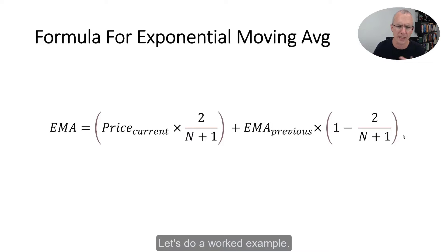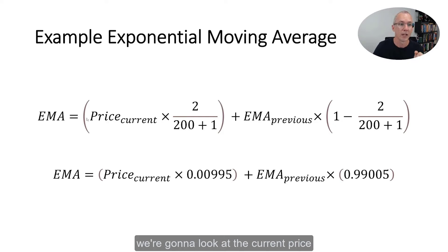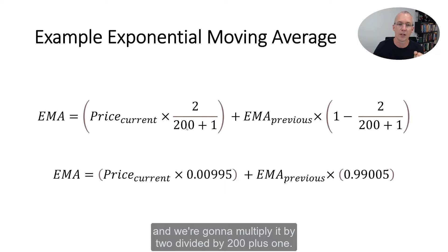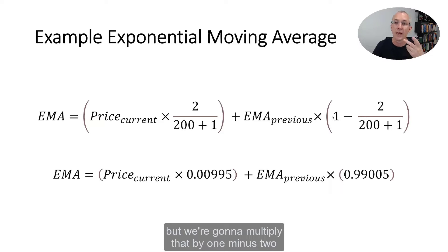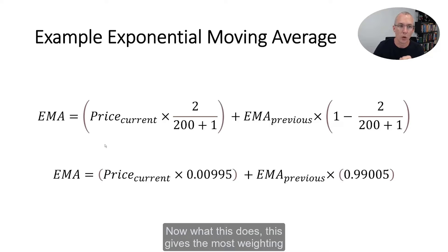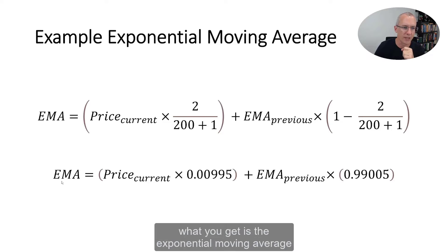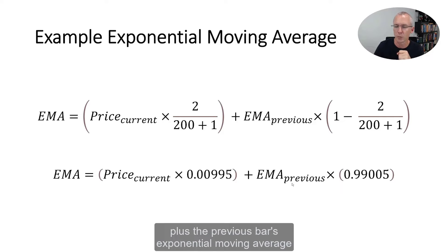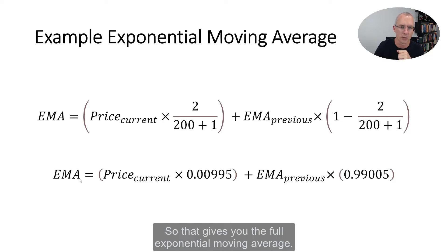Let's do a worked example. To calculate a 200-day exponential moving average, we look at the current price and multiply it by 2 divided by (200 plus 1), then add to that the previous bar's moving average multiplied by 1 minus 2 divided by (200 plus 1). This gives the most weighting to the current price bar and less weighting to the previous price bar. Working out this ratio: EMA equals current price times 0.00995, plus the previous bar's EMA times 0.99005. These two values add up to 1.